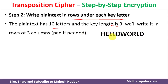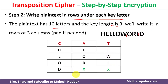So it will become H-E-L, L-O-W, O-R-L, and we are getting only D at the 4th row, so we need to pad. The arrangement becomes H-E-L, L-O-W, O-R-L, and D-X-X. This is how we write the 10 letters under the key in row format.